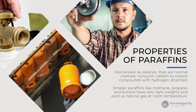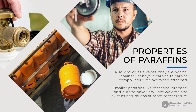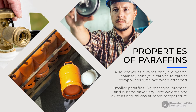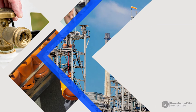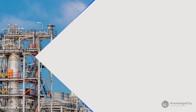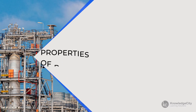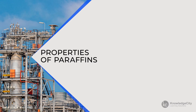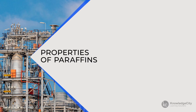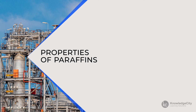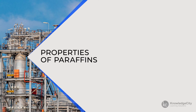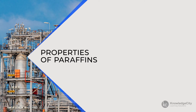Smaller paraffins like methane, propane, and butane have very light weights and exist as natural gas at room temperature and ambient pressure. The longer the carbon chain is, the heavier it becomes. Longer-chain paraffins like heptane and hexane exist as liquids and are often used in other chemical processes.